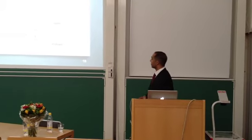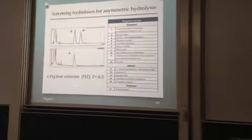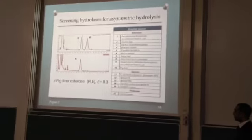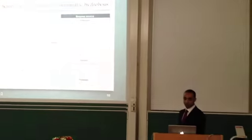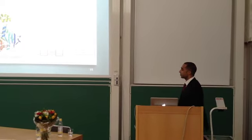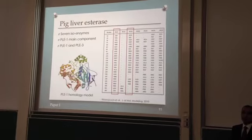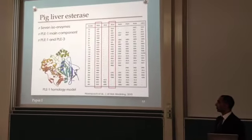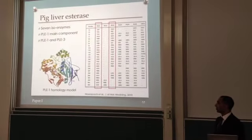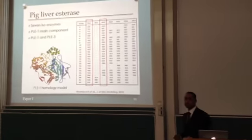We screened some hydrolases, and among the esterases used for screening, pig liver esterase showed noticeable enantioselectivity with an E-value equal to 8. However, pig liver esterase is a mixture of isoenzymes, which is not suitable for industrial application, especially in pharmaceuticals. So, based on information found in the literature, BLE-1 and BLE-3 were used for further studies.